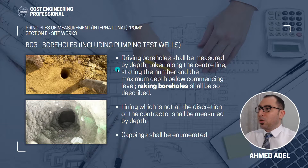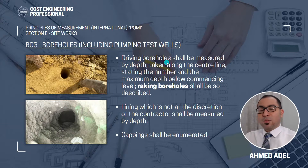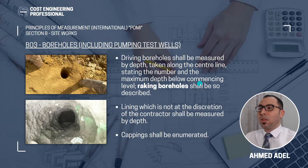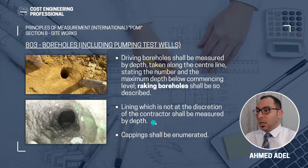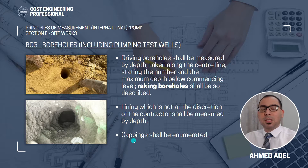Section three covers boreholes, including pumping test wells. Driving boreholes shall be measured by depth, taken along the centre line, stating the number and the maximum depth below commencing level. Raking boreholes shall be so described — you have to describe the type of raking borehole with its dimensions and depth. Lining which is not at the discretion of the contractor shall be measured by depth, and cappings shall be enumerated, meaning counted.